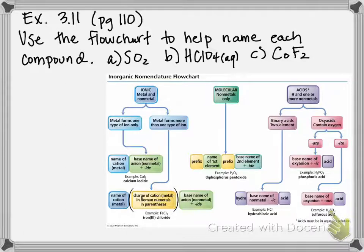First thing we need to do is determine what type of compound it is. So SO2, sulfur is a nonmetal. Oxygen is also a nonmetal, so therefore we're going to be naming it as a molecular compound. So A is a molecular compound.